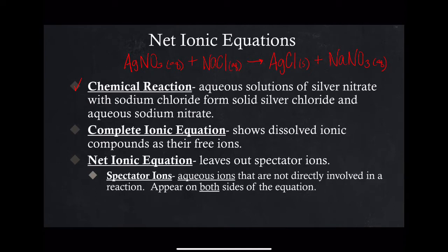The second step is to write the complete ionic equation. A complete ionic equation shows ionic compounds — dissolved ionic compounds — as their free ions. When you put an ionic compound in a solution, if it's soluble, which is what we identified with our solubility rules, they're labeled as aqueous. Those are soluble. Silver chloride is a solid, so it's insoluble. But if they are soluble, they don't remain in the compound form. They break down into the ions.